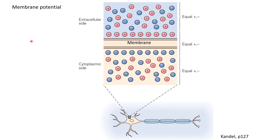The resting membrane potential is around minus 65 millivolts because there is more negative charge inside the neuron compared to outside. There are both positively and negatively charged ions inside and outside — it is just that the number of negative ions inside is slightly more. These negative charges repel each other, accumulate on the membrane, and an equal amount of positive charge accumulates on the other side. As we saw in the last video, the membrane acts like a capacitor and can store charge. A thinner membrane would provide more stabilization and greater capacitance.